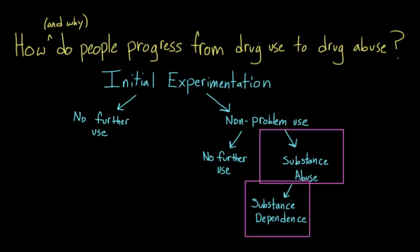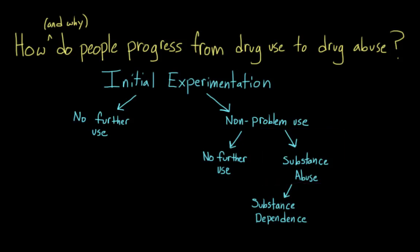Substance dependence is a state where he is addicted to the substance and would experience withdrawal symptoms if he tried to quit. This figure shows us the different pathways that people can take in terms of substance use, and also how different patterns of use might move someone from use to abuse. The most interesting part of this theory is that it says people can move back and forth along these paths. So maybe John begins to realize his drug taking is becoming out of control, and he moves back from substance abuse to non-problem use — deciding he's only going to use cocaine in social situations. And maybe after a while, he stops using entirely, or maybe he just continues with non-problem use.